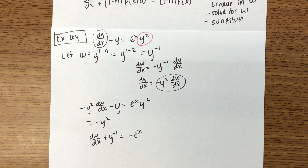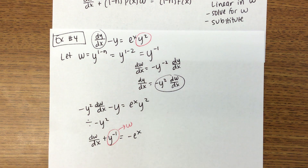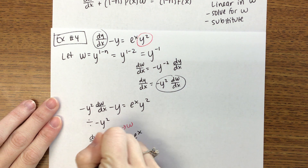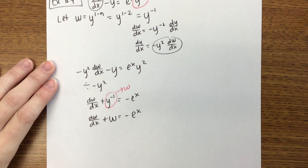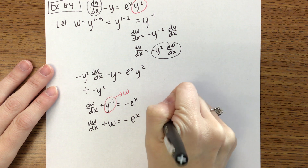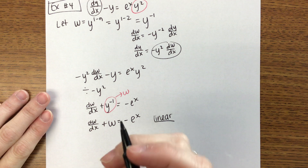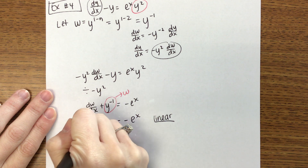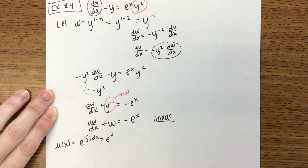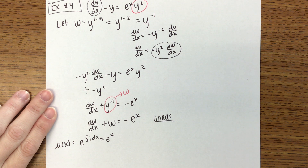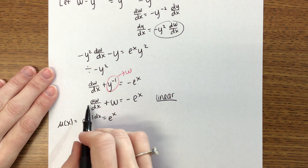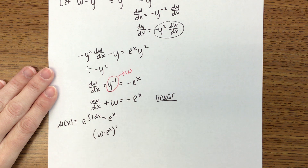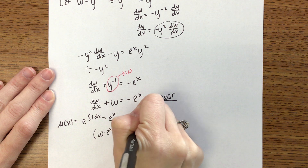If we did everything right, once we get this in linear form this term should have a w in it — which ours does. So we get dw/dx plus w equals negative e to the x. This is now linear, so we are going to have to find our integrating factor, which will be e to the integral of 1 dx, which is e to the x.